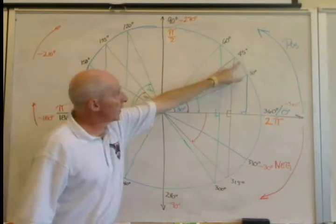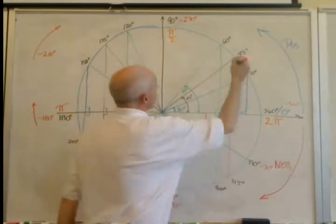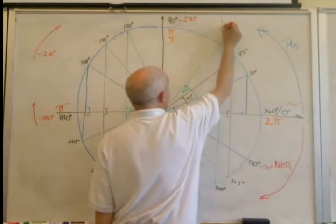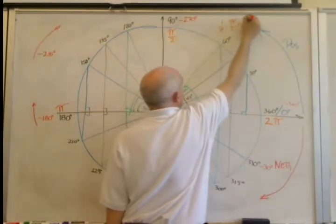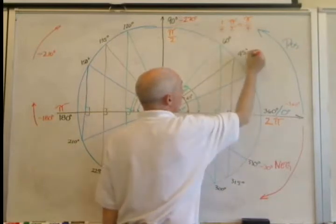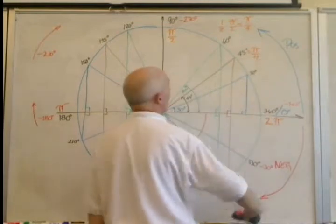Half of 90 degrees is 45 degrees, half of pi over 2, you can write it as one-half times pi over 2, which is equal to pi over 4, and that goes right here. Pi over 4.